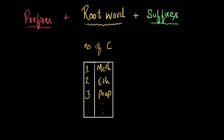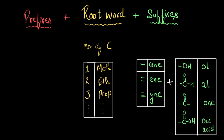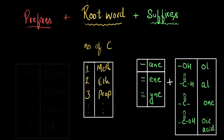For example, if there are double bonds or triple bonds present in the carbon chain, then we use specific suffixes. But if there are no double or triple bonds present, then by default the carbon atoms are connected to each other by single bond, and we use the suffix '-ane'. If there are oxygen-containing functional groups, we add those suffixes to the name. And if there are functional groups like bromine, chlorine, fluorine, and iodine, then we add prefixes to the name.